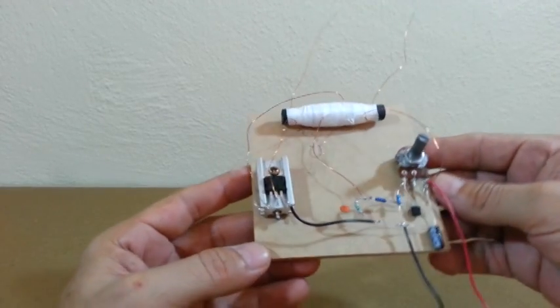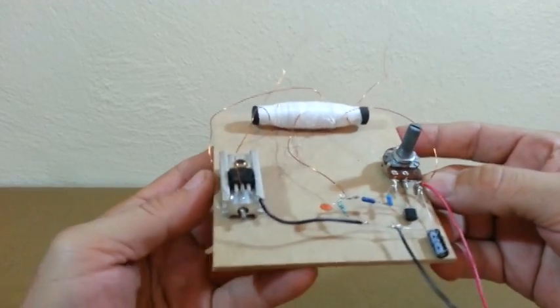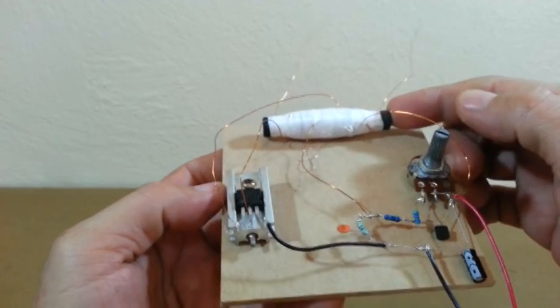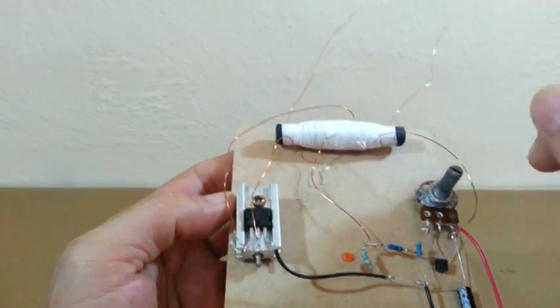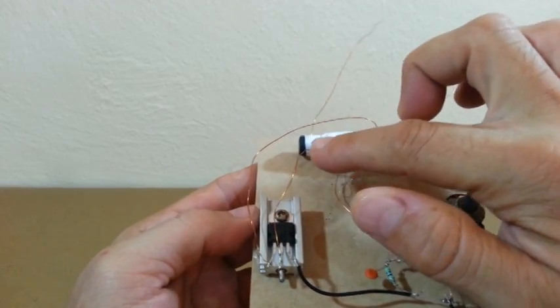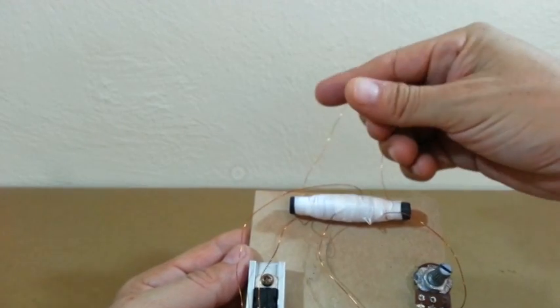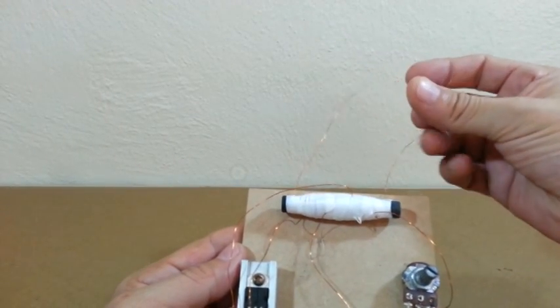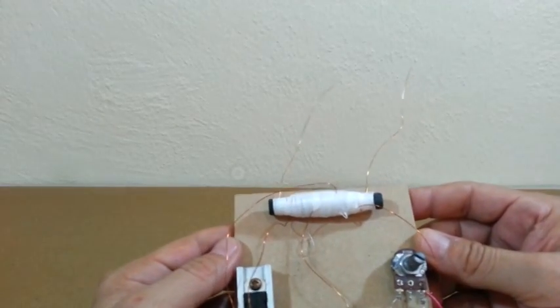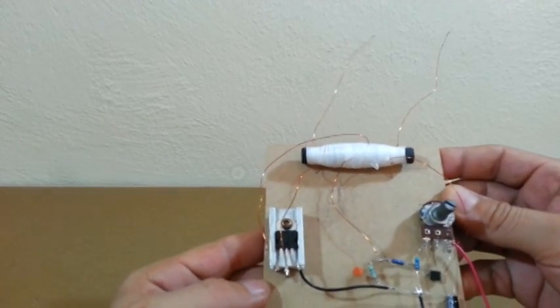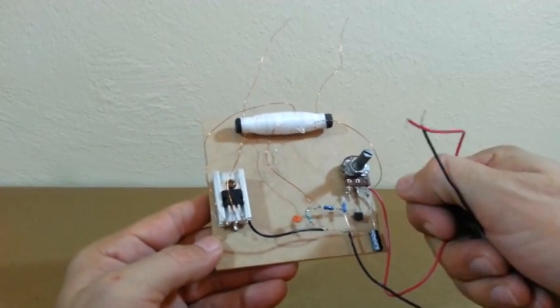Here is our inverter for fluorescent light. You can see the transformer. Here we have the feedback coil. These wires are the primary coil. And these two are the output from the secondary, which is the high voltage output and goes to the lamp. And connections for the input voltage.